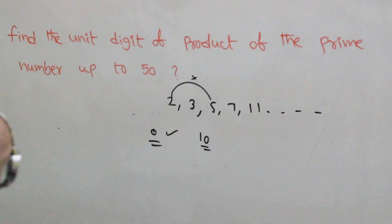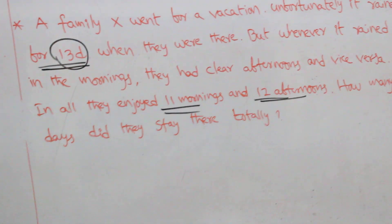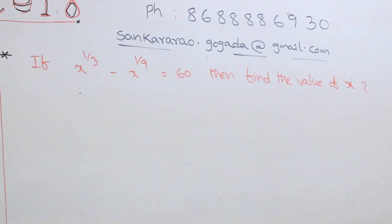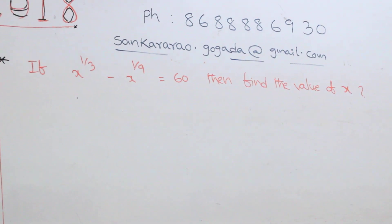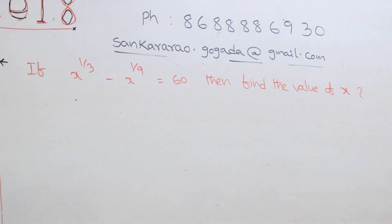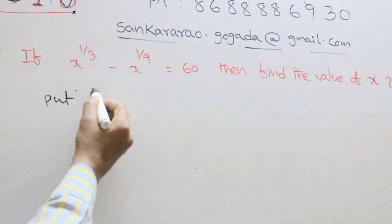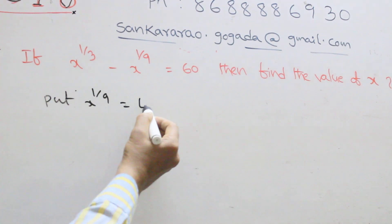Coming to the next question. Given X power one by three minus X power one by nine equal to sixty, then find the value of X. In this question, put X power one by nine equal to t is the assumption.